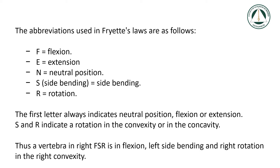The abbreviations used in Freyette's laws are as follows: F stands for flexion, E means extension, N stands for neutral position, S indicates side bending of the vertebra, and R is used to indicate rotation. In Freyette's nomenclature, the first letter always indicates neutral position, flexion, or extension. The other letters S and R indicate a rotation in the convexity or in the concavity. When S is placed before R it indicates a rotation in convexity; when R is placed before S it indicates a rotation in the concavity. Thus, a vertebra in right FSR is in flexion, left side bending, and right rotation in the right convexity.